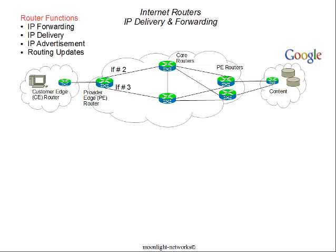We can break the router functions down into the four you see here. There is a forwarding function, which means that each router receives a packet on an incoming interface and has to make decisions around which outgoing interface to use to forward the packet. The second function is delivery. The last router in the chain — the one connected to the destination host machines — delivers the IP datagram not by forwarding but by resolving the link layer addresses, so that is a delivery function as opposed to a forwarding function.